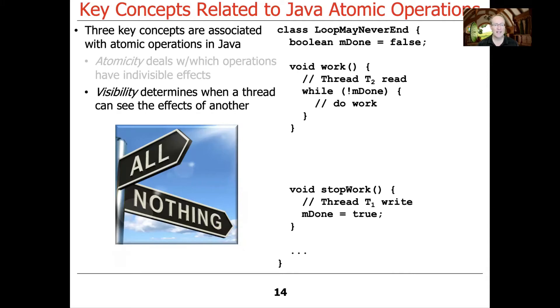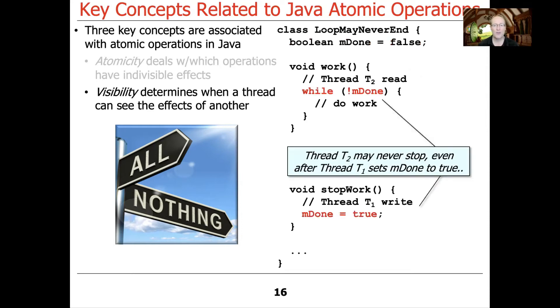Visibility determines when another thread can see the effects of its associated thread. This is a subtle point and it doesn't make sense at first when you just look at the code. But when you understand what's going on under the hood and you think about how the Java memory model is working, it gets a lot more sensible. So let's make this example come to life. We have an example called loop may never end. We define a field called mDone, which is just a good old Boolean that we assign the value false to. And notice this is unsynchronized and it's mutable shared state. Just like the example we looked at before with mCounter was unsynchronized and mutable shared state. So now we have two threads. One thread is going to be calling this work method. It basically just says while not done, in other words, while done is set to false, do some work. And that's what thread T2 does.